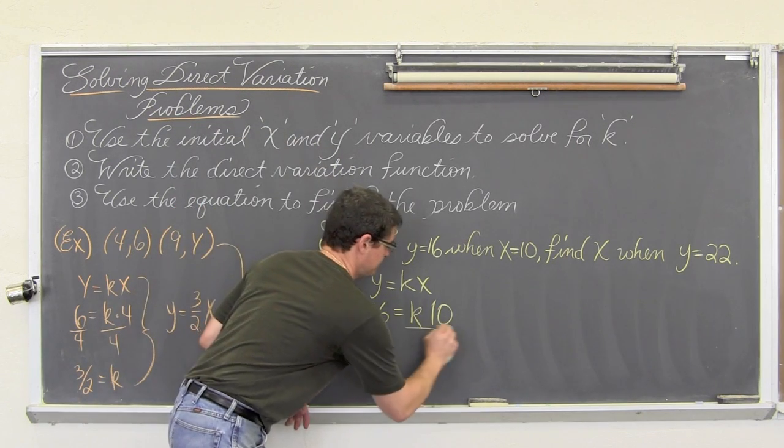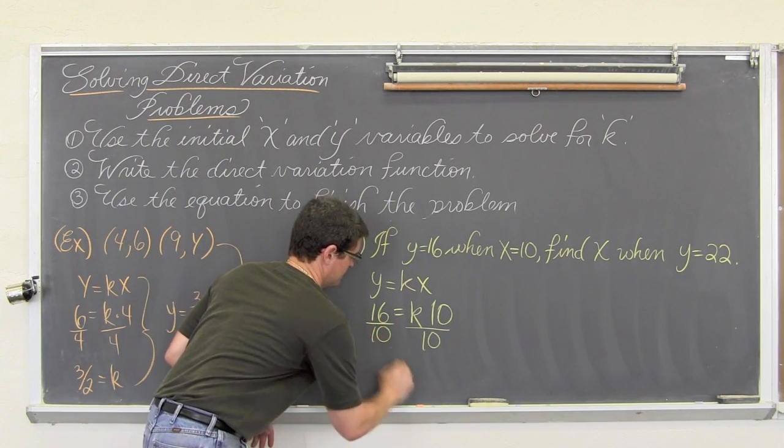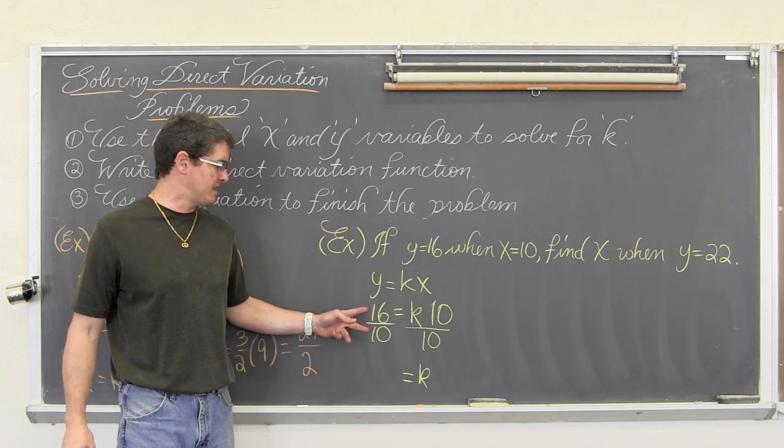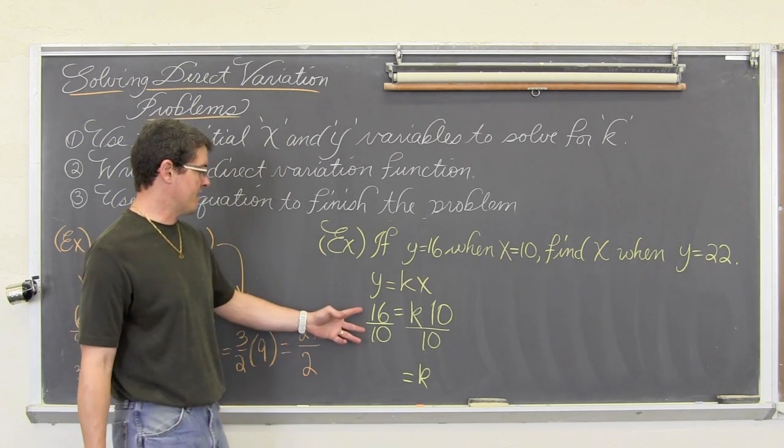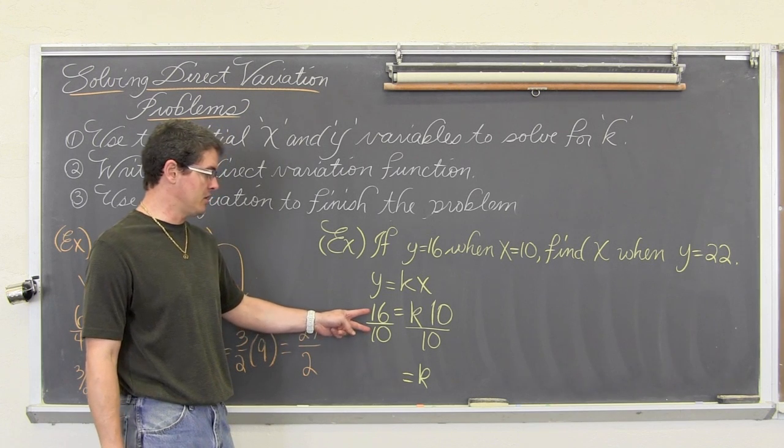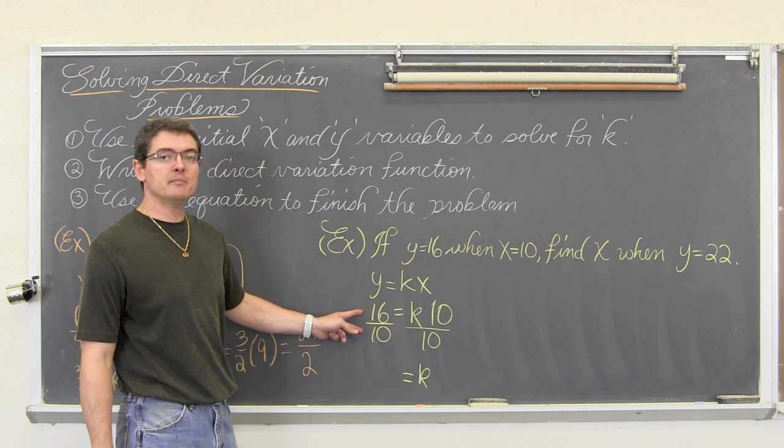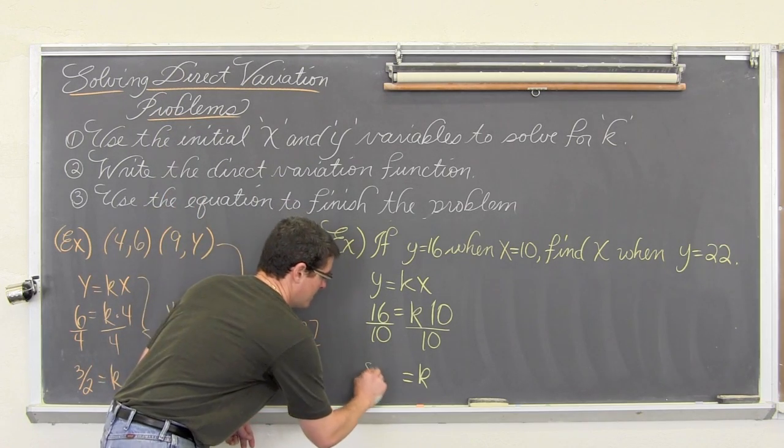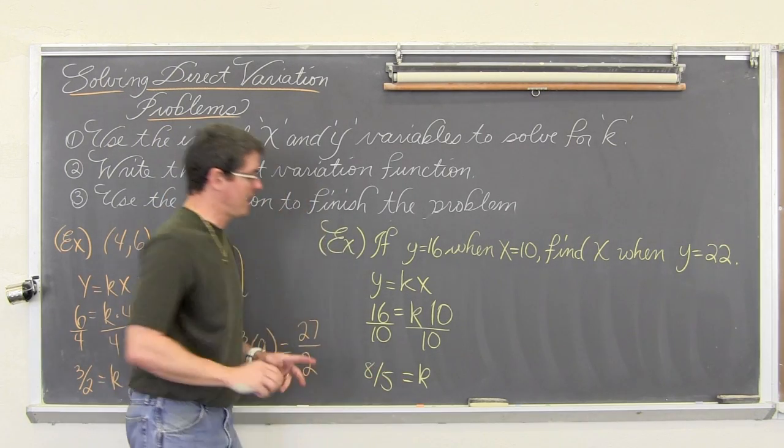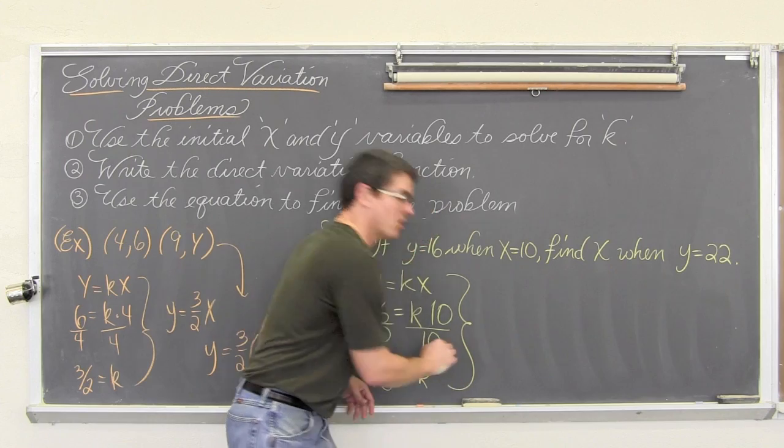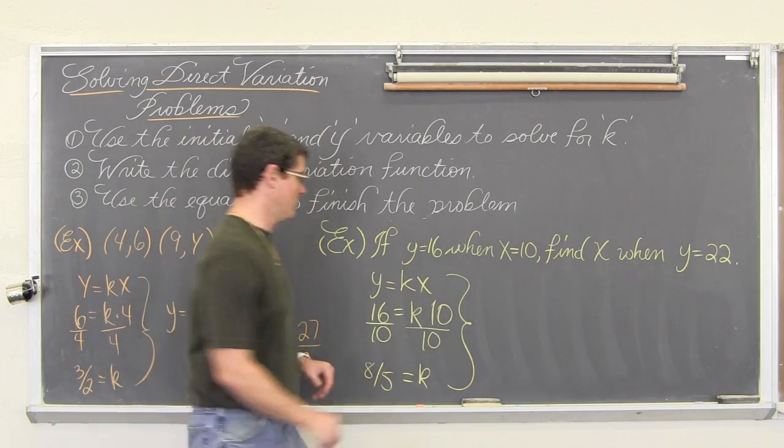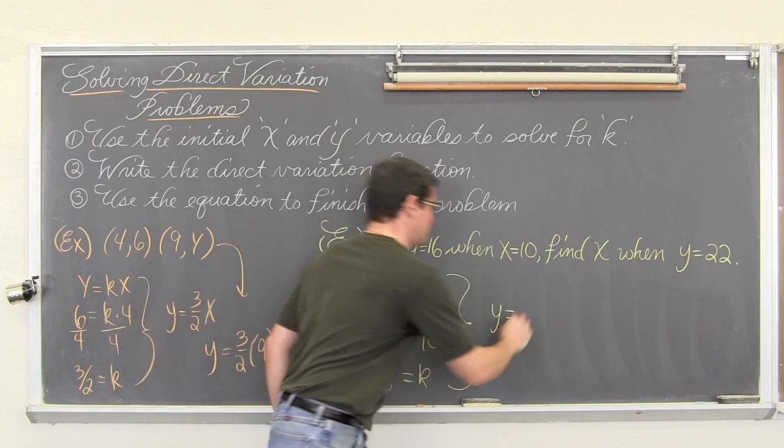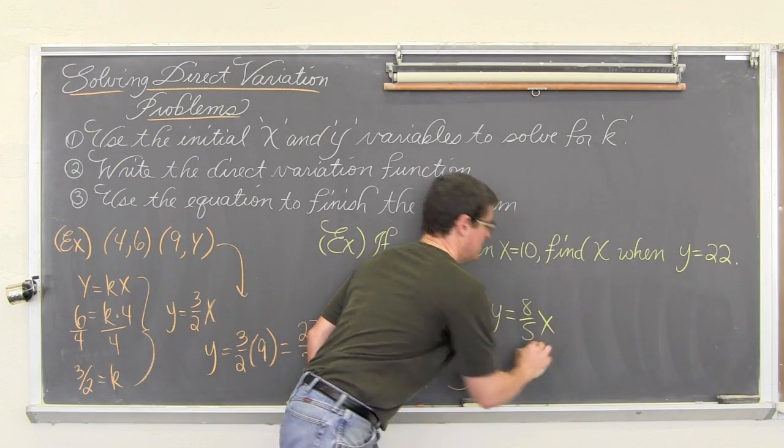Divide both sides by 10. Now, 16 and 10, I want to keep this in exact form. I will show you some fraction work. These are both even, so we are going to reduce this fraction by dividing both the top and bottom, the numerator and denominator by 2, so it is going to be 8 fifths, and write the equation. So, all of this work allows us to find a k value, which is y equals to 8 fifths times x.